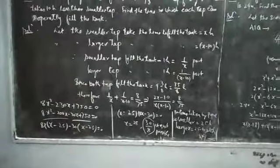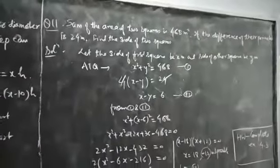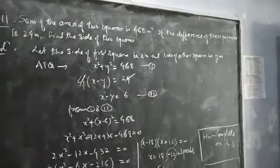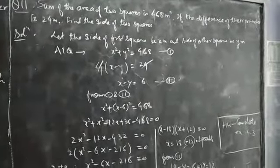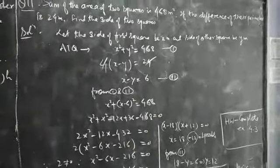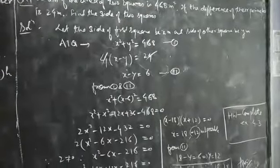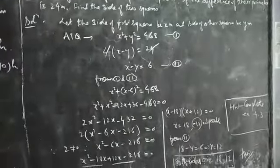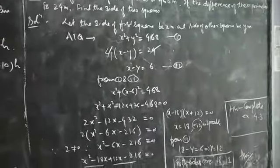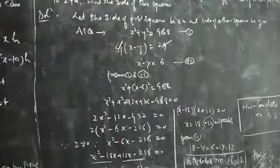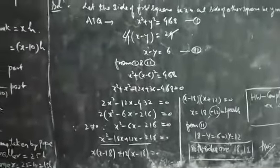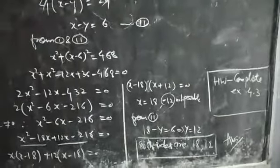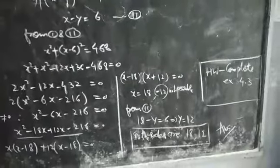This is the solution of question number 9. See question number 11. Let the side of the first square be x, which is larger, and the side of the other square be y, which is smaller. According to the question, x squared plus y squared = 468. This is the first equation, and the second equation is x minus y = 6. From the two equations, the expression becomes x squared plus (x - 6) squared = 468. After simplification, this becomes the quadratic equation x squared minus 6x minus 216 = 0. Factorizing, (x - 18)(x + 12) = 0, so x = 18 and x = -12. Since -12 is not a possible value, x = 18.